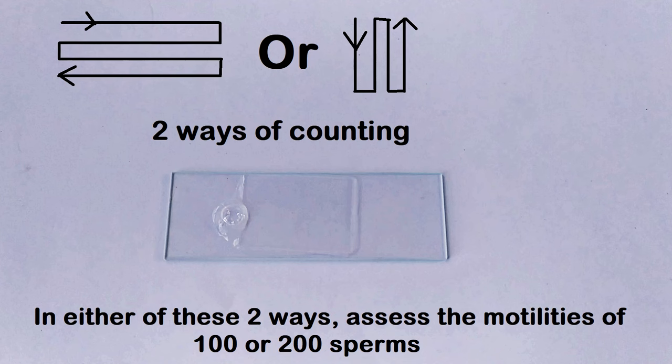100 or 200 random sperm cells are briefly observed one by one to check for motility or the lack thereof. To minimize the chances of repeated assessment of the same sperm cell, the microscopic field of view is changed frequently in a specific order of movement, such as from the left corner of the slide to the right corner, until 100 or 200 cells have been assessed.